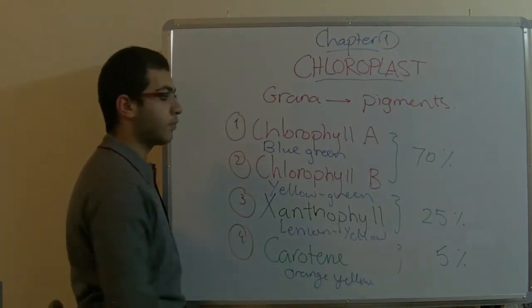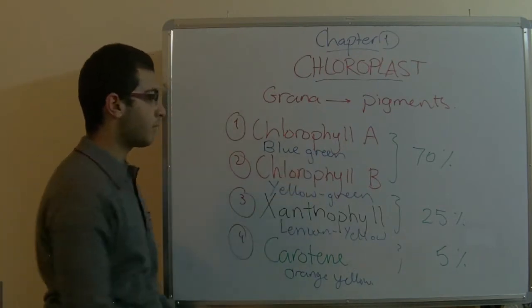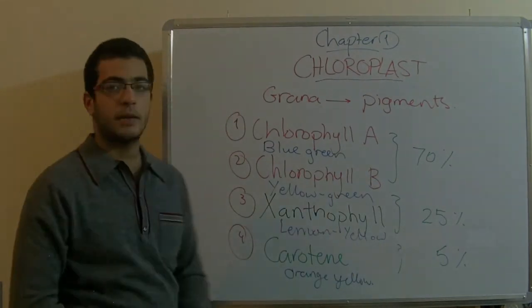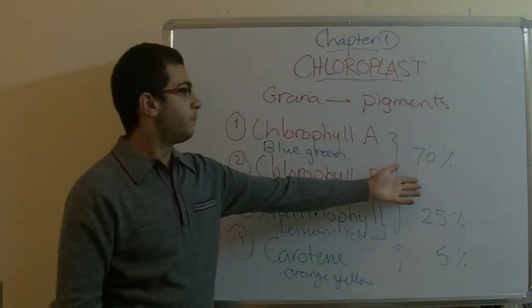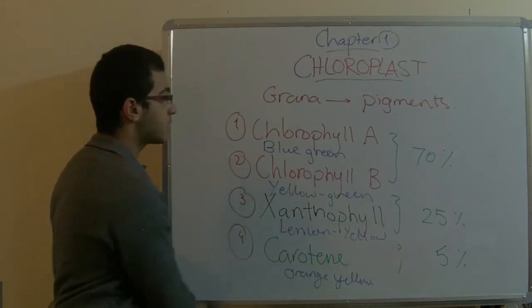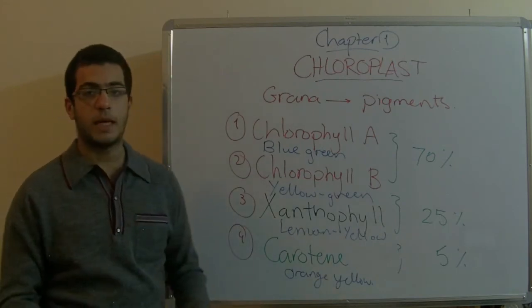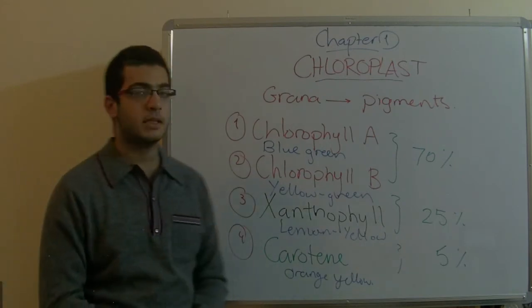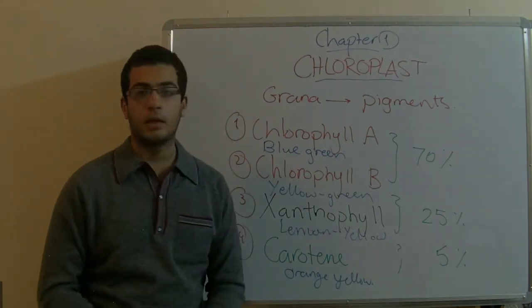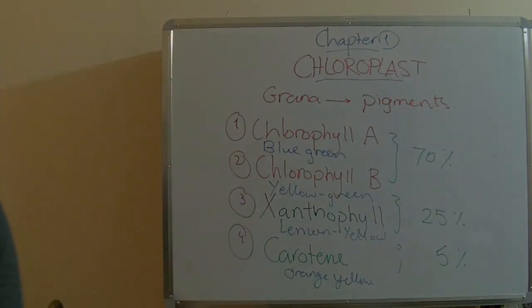And that's why the green color dominates the other colors of the chloroplasts, because those both are green and they represent the majority of the pigments inside the chloroplast. They represent 70%, and as a result, the green color dominates all the colors inside the chloroplasts. That's it for today. Next time we will talk more about the chlorophyll. See you next time, thanks for watching.